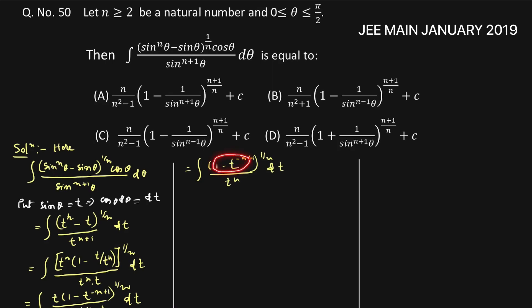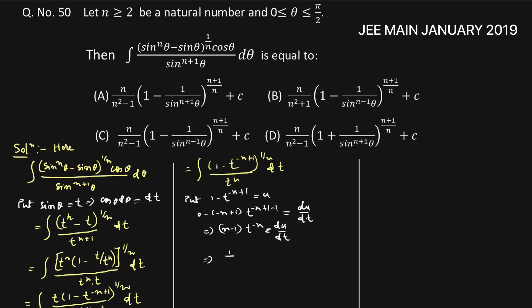Now we put 1 minus t to the power n plus 1 equal to u. Differentiating both sides with respect to t, we get 0 minus (n plus 1) t to the power n, which equals du by dt. Simplifying, we get (n minus 1) t to the power minus n equal to du by dt, so 1 by t to the power n dt equals 1 divided by (n minus 1) du.